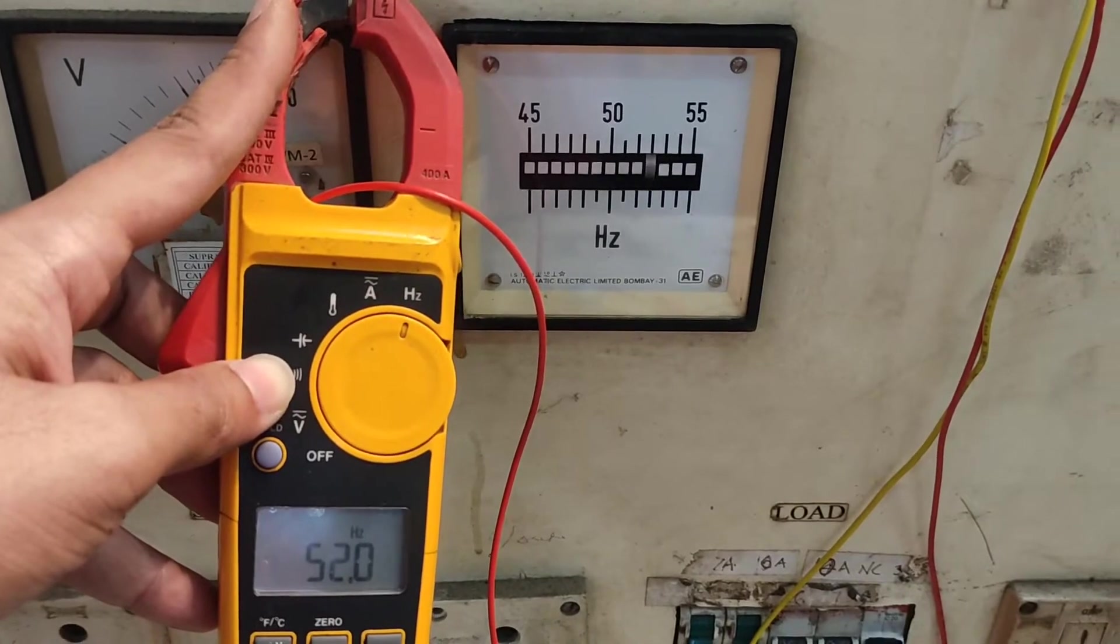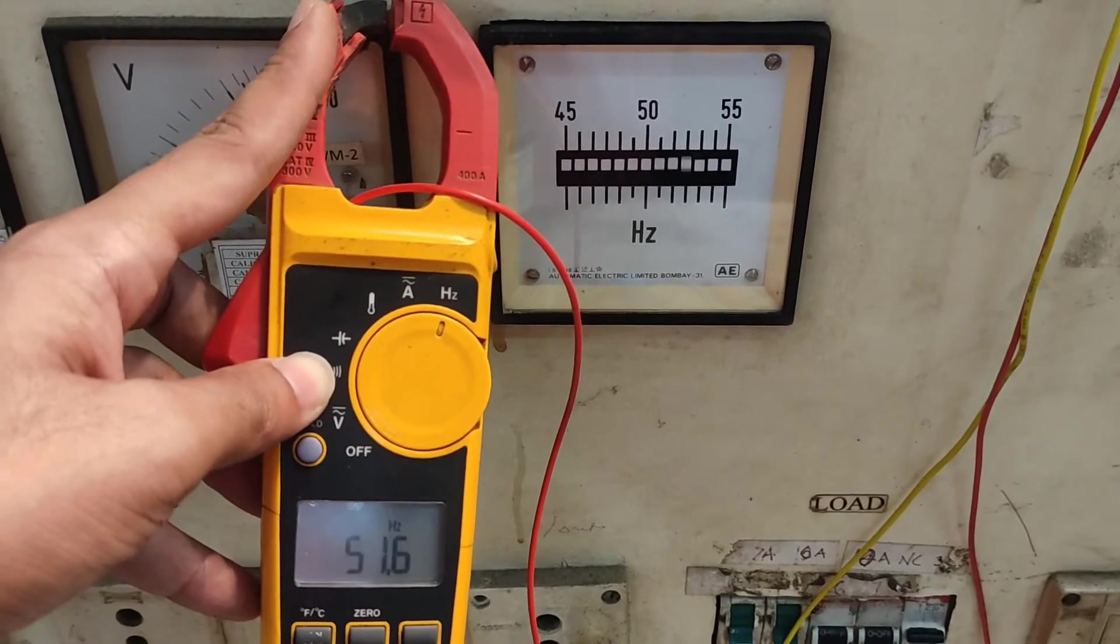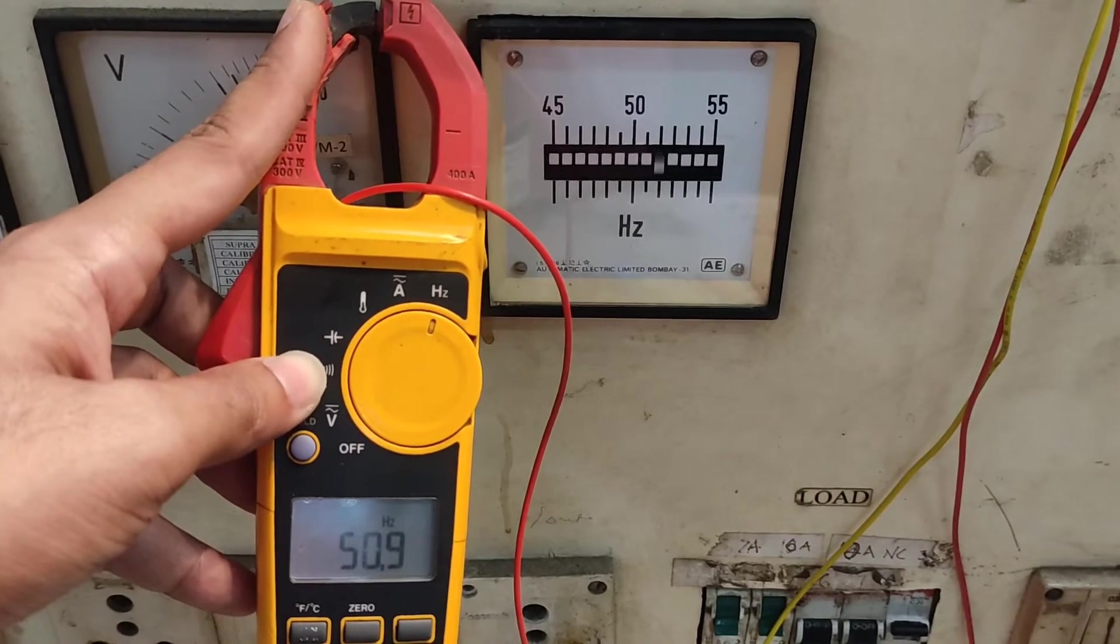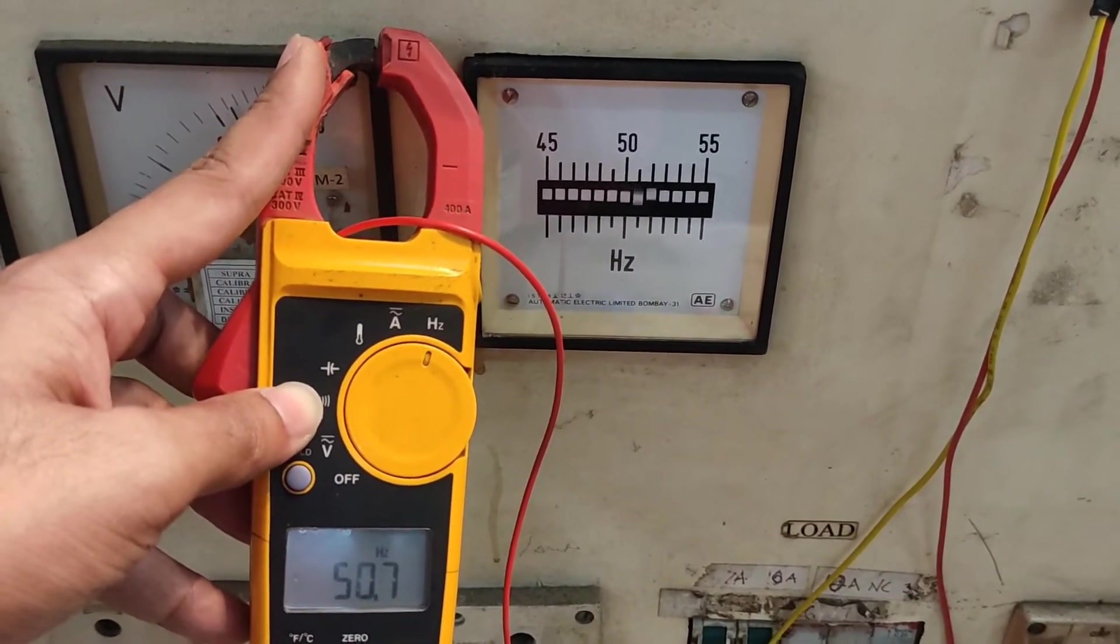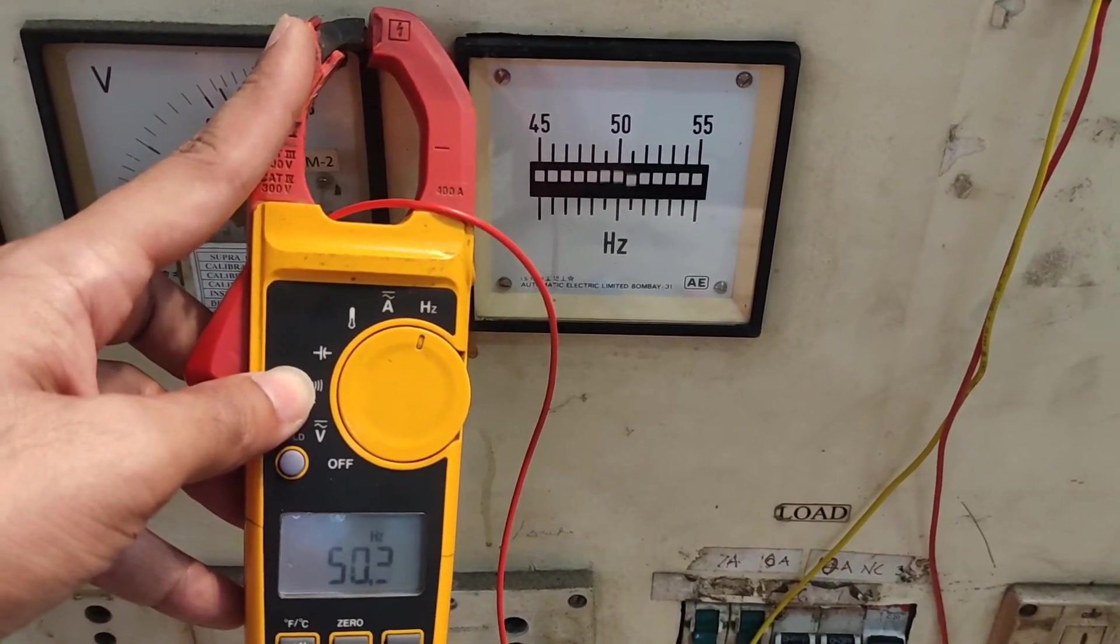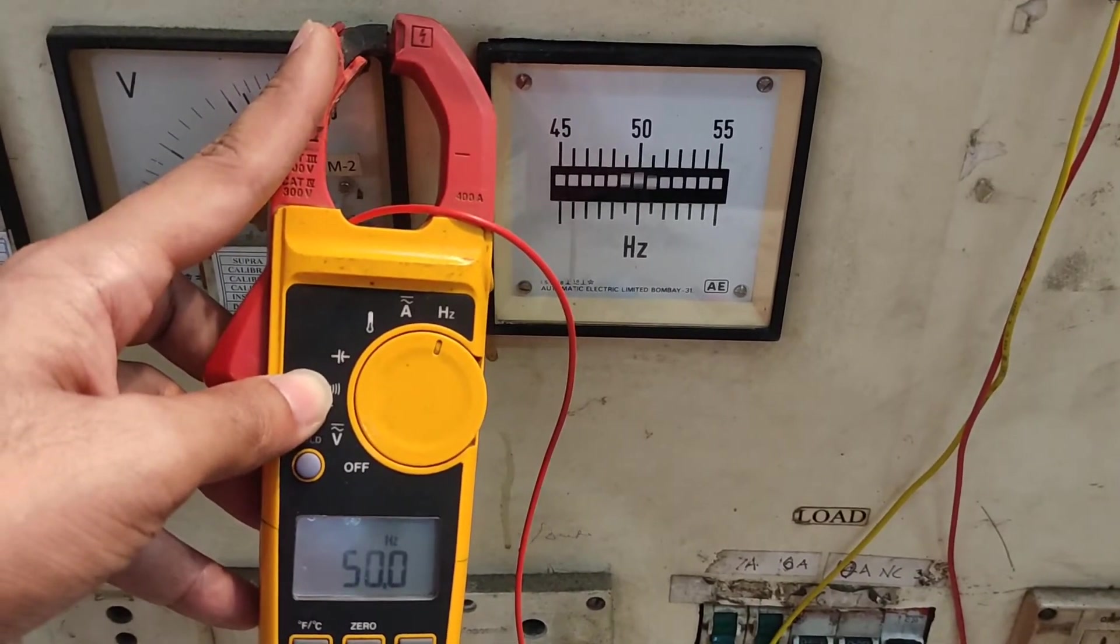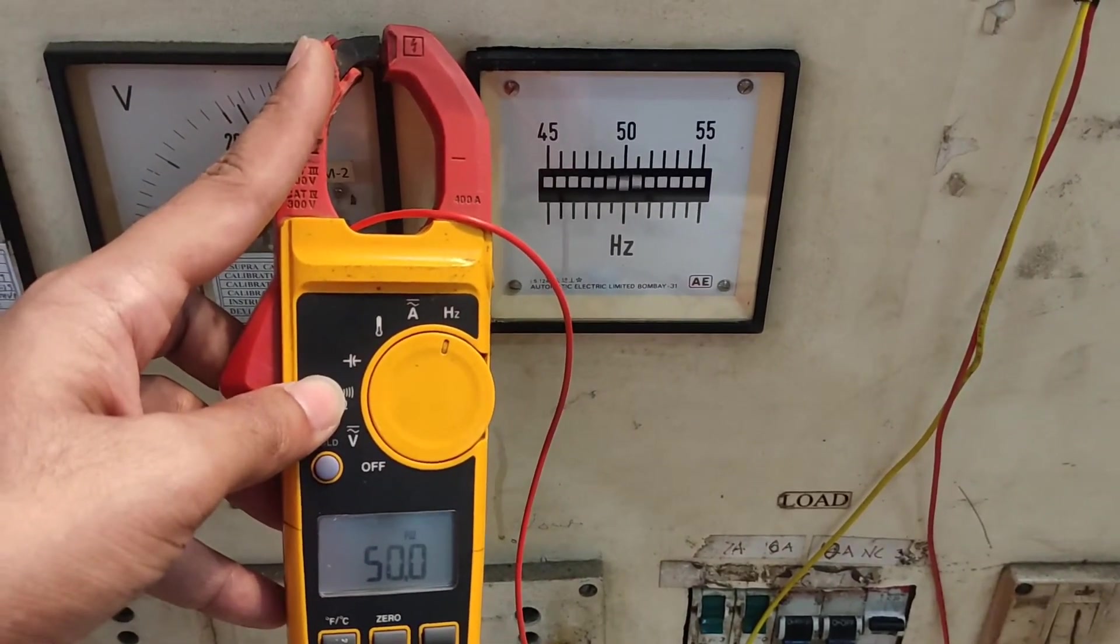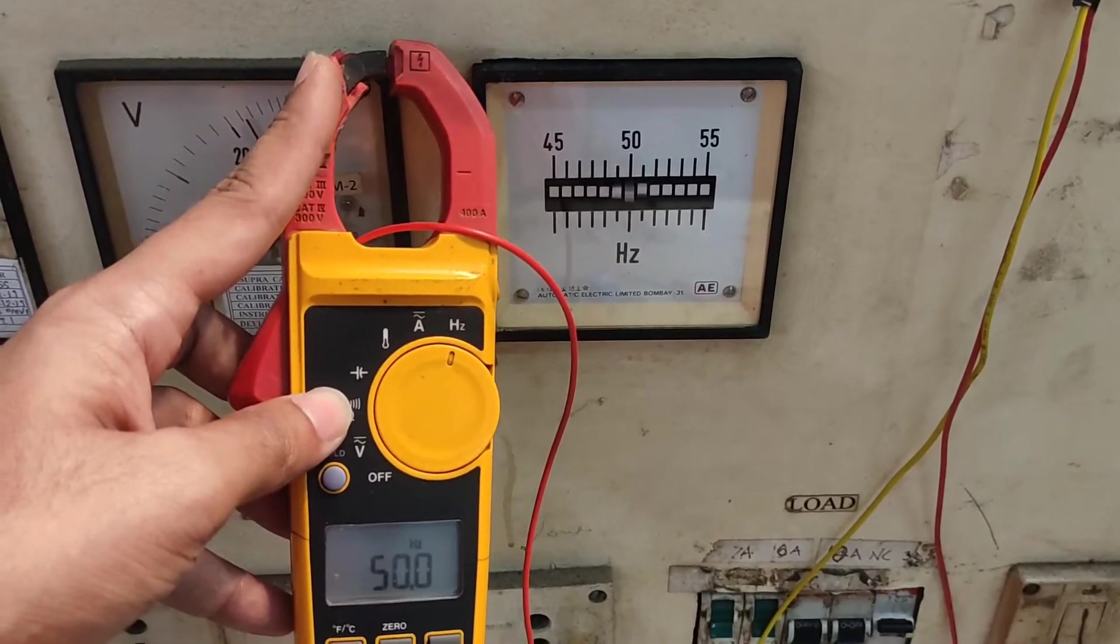As I increase the frequency towards 52, you can see exactly the 52 marker vibrating. As I decrease to 51, the 51 hertz marker vibrates. At 50.5, the smaller one vibrates, and at exactly 50, the center one vibrates. This is how the whole unit works. Now that I've shown you the working, I can tear it down, so on to the teardown.